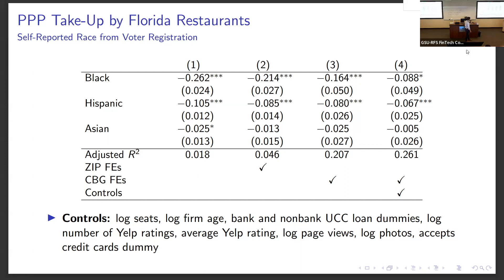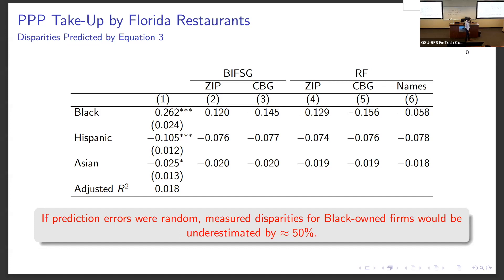The next table reports, using equation three in the paper, what would be measured disparities for black-owned firms if prediction errors were uncorrelated with firm characteristics. If that were the case, then given the accuracy of these algorithms, we would find measured disparities that are only half of actual disparities.